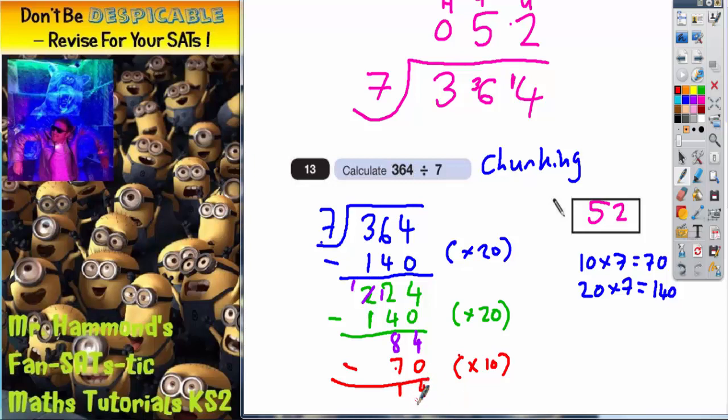And now it's nice and easy. How many 7's make 14? It's 2. And if you subtract your 14 from 14, you're going to end up with 0, which is what you're aiming for.